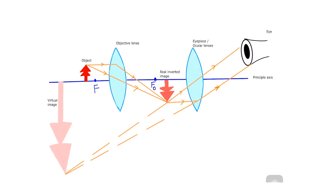Now, to understand the principle of the compound microscope, look at this image. This is the principal axis, this is the eyepiece or ocular lens, this is the objective lens, this is the focal point of the objective lens, and this is the object. In the compound microscope, the object is placed near but outside the focal point of the objective lens. The light ray parallel to the principal axis will reflect and change direction, while the light ray not parallel to the principal axis will directly pass through the center of the objective lens. The meeting point of these two rays is the place where a real but inverted image forms. The focal point of the eyepiece is adjusted so that this real inverted image falls within the focal point of the ocular lens.